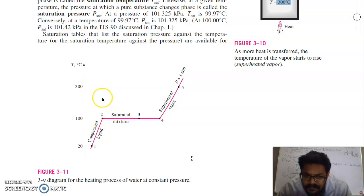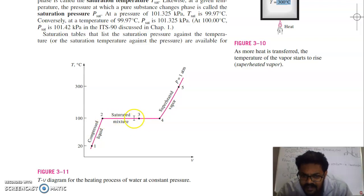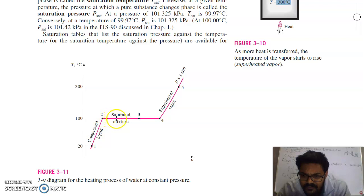If you further supply heat, from state 2 to state 4 we are supplying heat to the liquid. Liquid starts to change into vapour — part of liquid converts into vapour. At state 3 you have part in liquid form and part in vapour form. So this mixture at state 3 is called a saturated mixture. Temperature remains constant at 100 degree Celsius from state 2 to 4 — this is the phase change process. At state 4 you have complete vapour at 100 degree Celsius.